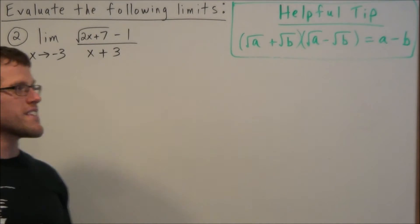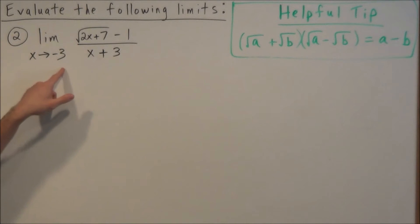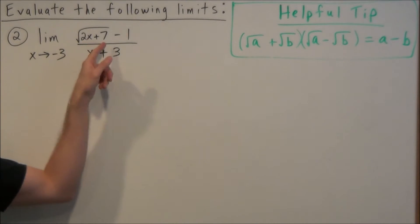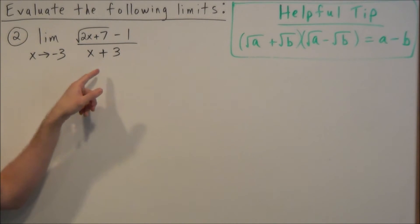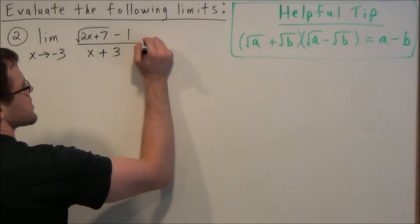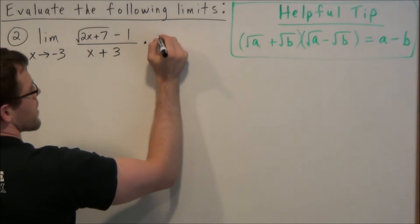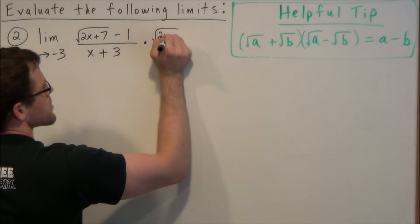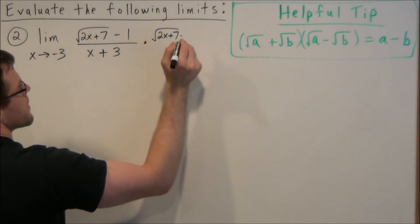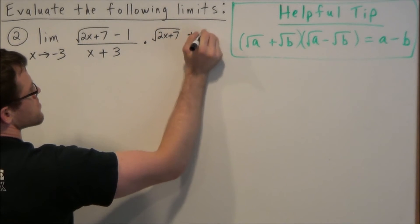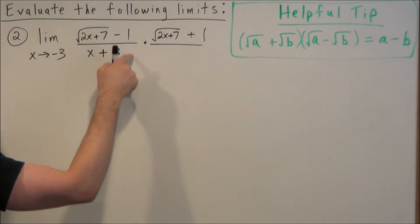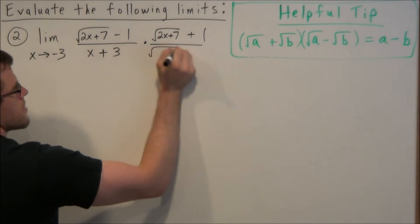Okay, so now for the second example, we have the limit as x approaches negative 3 of radical 2x plus 7 minus 1 over x plus 3. So we're going to multiply by the conjugate of the binomial involving the radical. So we're going to have radical 2x plus 7, and then outside the radical, we're going to have plus 1. So we're going to multiply both the numerator and denominator by this expression here.